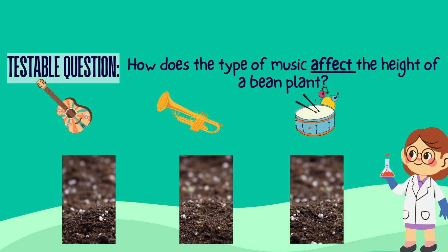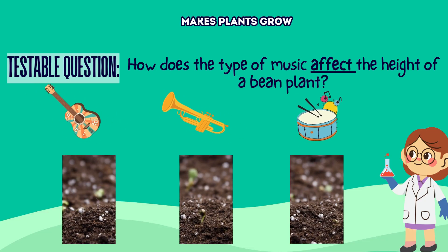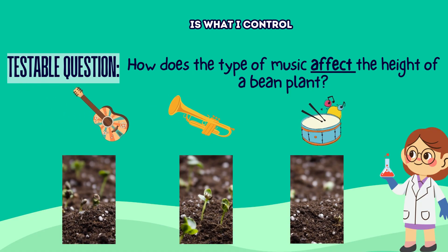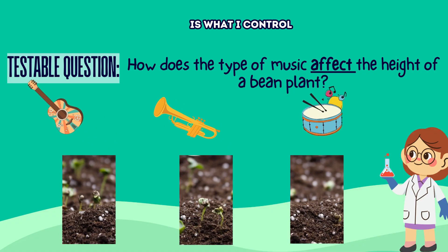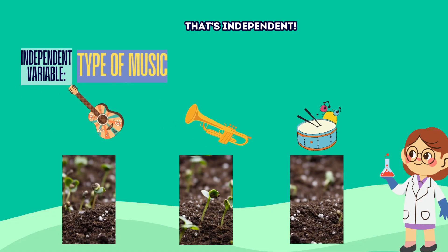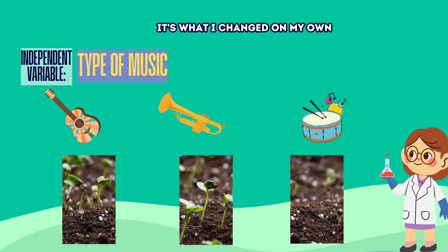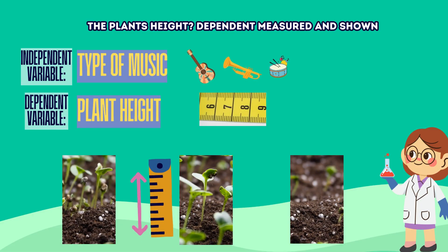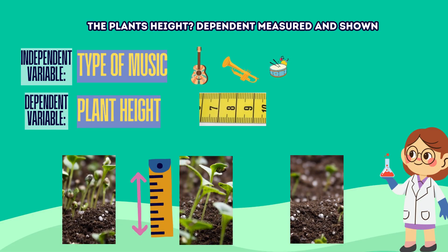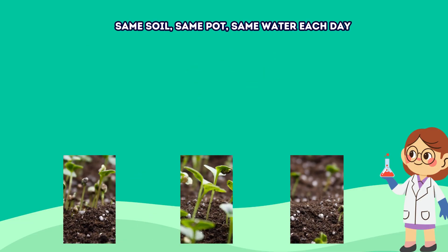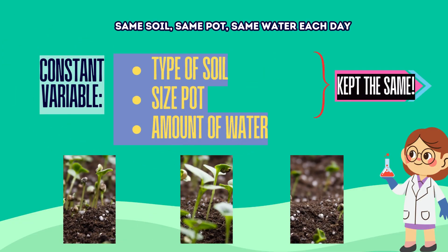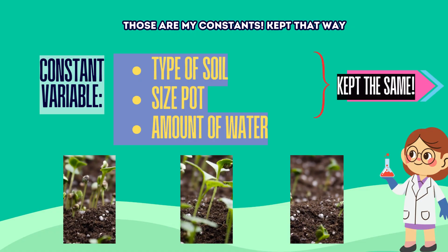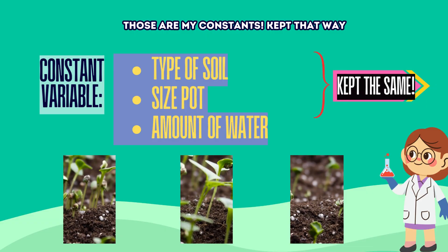If I test how music makes plants grow, the kind of music is what I control. That's independent — it's what I changed on my own. The plant's height is dependent, measured and shown. Same soil, same water each day — those are my constants, kept that way.